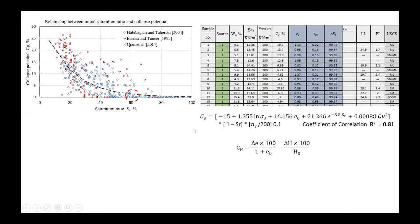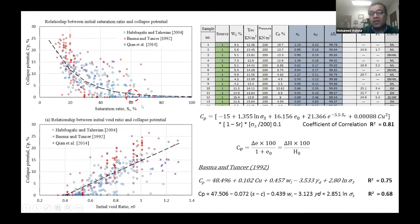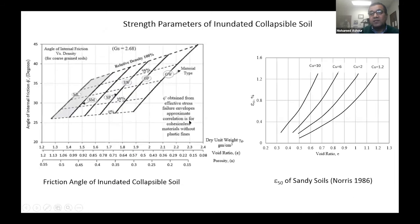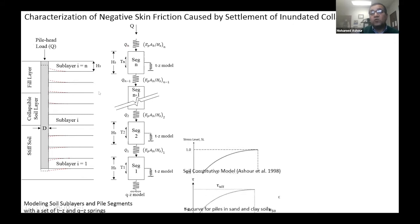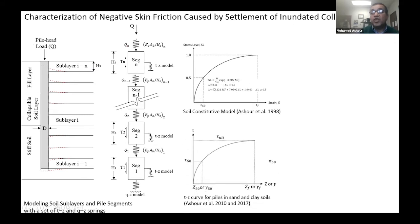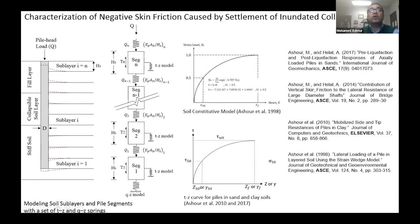Once we get the settlement, we can get the new properties: the friction angle of the soil and the epsilon-50 based on the new void ratio. Now we have soil with new properties that we can work with. We then go to the interactive model to detect negative and positive settlement based on the TZ curve and the strain curve relationship, using our previous research to develop the TZ curve and settlement model.